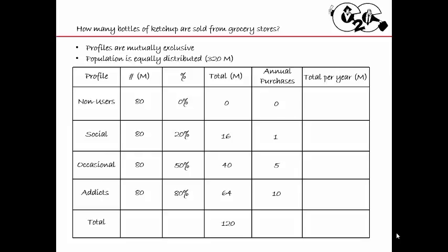Now I'm going to do the math all the way across. Non-users: obviously zero. Social: 16 million times 1 gives me 16 million. Occasional: 40 times 5 gives me 200 million. Addicts: 64 times 10 gives me 640 million. I'm picking numbers that make the math easy — 64 times 10, just put a zero on the end. Adding it all together: 0 plus 16 is 16, plus 200 is 216, plus 640 gives me 856 million bottles.